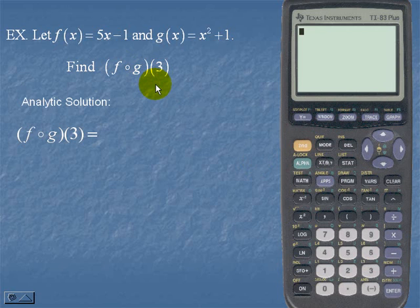Here's the analytic solution. f circle g of 3, by use of the formulas, is f of g of 3.